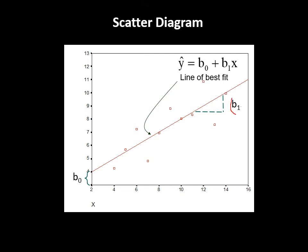What does slope mean? Slope is the change in Y over the change in X — if you change X by one unit, what is the average change in Y? And the intercept B0 is the value of Y when X is equal to zero.